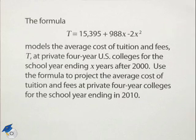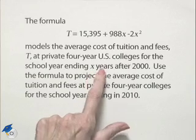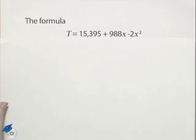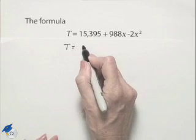Well, to use this formula, we notice that this has to be X years after 2000, so our X is going to equal 10. What that means is we simply substitute the value of 10 wherever we see an X.